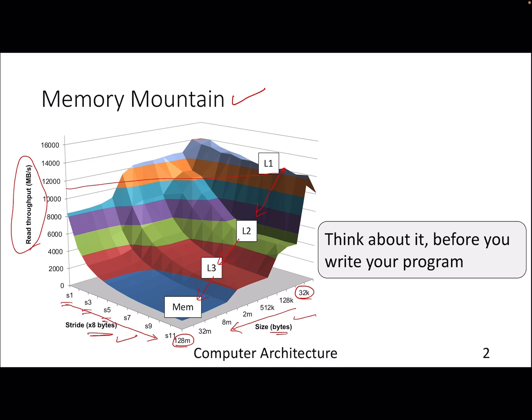But as you see, if you start going to L2 or L3 or just to memory, your throughput goes down, so eventually your execution time will also go up. You can also look at the effect of strides here.